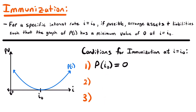There are two more conditions that need to be true. If you remember from calculus, in order to have a minimum or maximum value, you need a critical point where the slope is zero. The tangent line at that point would be horizontal with a slope of zero. So the second condition is that the first derivative of the net present value function evaluated at i-naught needs to be equal to zero: capital P prime of i-naught equals zero.